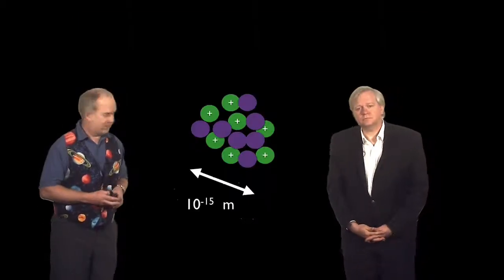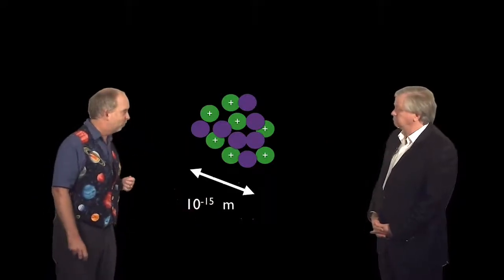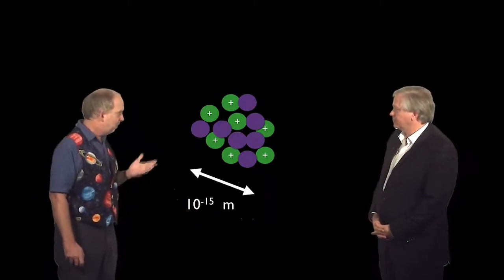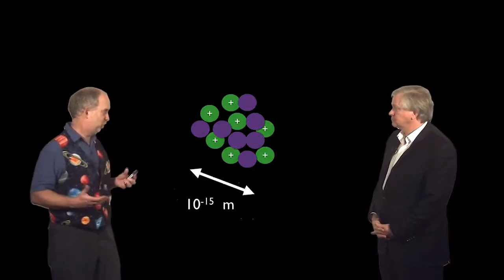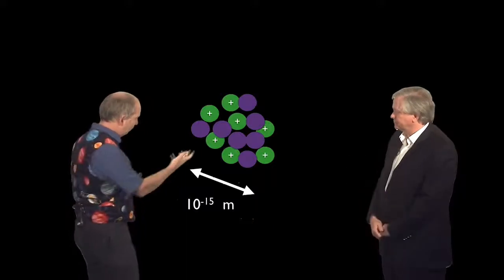So if you think about the nucleus of an atom, it's about 10 to the minus 15 of a meter across, and it's got some protons and neutrons in it, but of course there's a problem here. I mean protons are positively charged, and two like charges repel each other. Right. So how's that going to work?